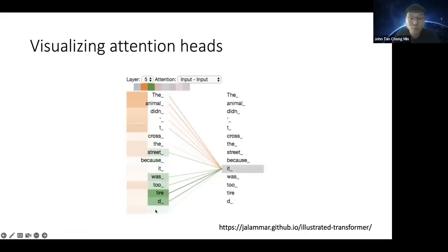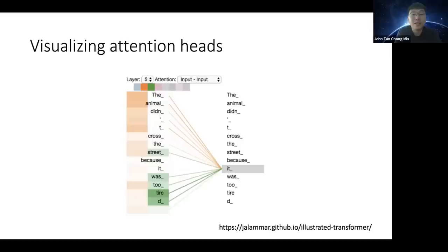In a visualization, the orange head shows 'eats' attending to the animal, while the green head shows 'eats' attending to 'tired.' This example is probably cherry-picked, but the idea is that with enough attention heads, at least one will find a meaningful relation. The model is trained through backpropagation, and you hope that multiple heads capture relations important to your problem.